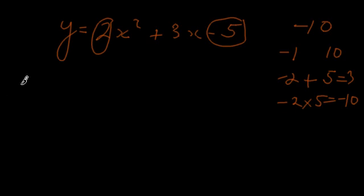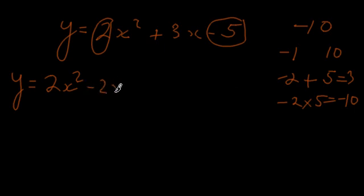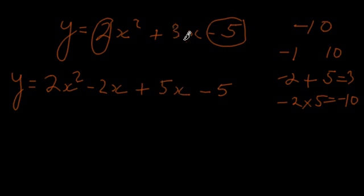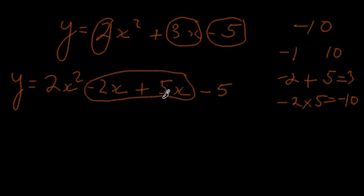The next step is to rewrite this function like so: 2x squared we leave the same, then we have minus 2x, plus 5x, and minus 5. What we did is we just rewrote our 3x as negative 2x plus 5x, because negative 2x plus 5x gives us 3x. The 2x squared and the negative 5 are the same as our original question.